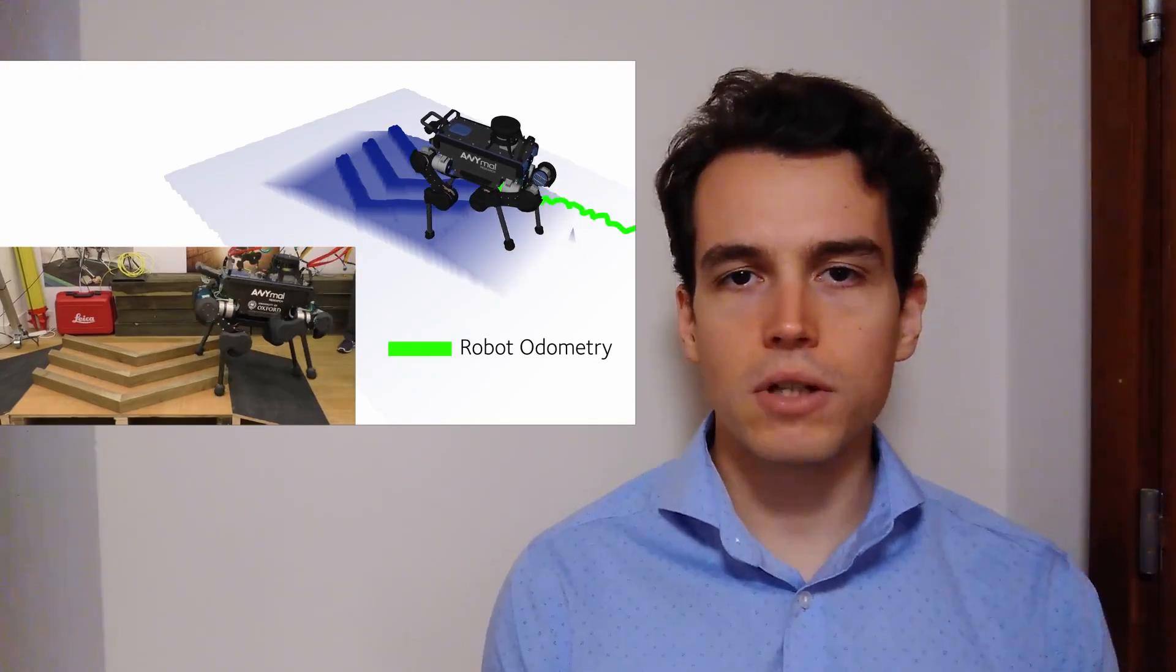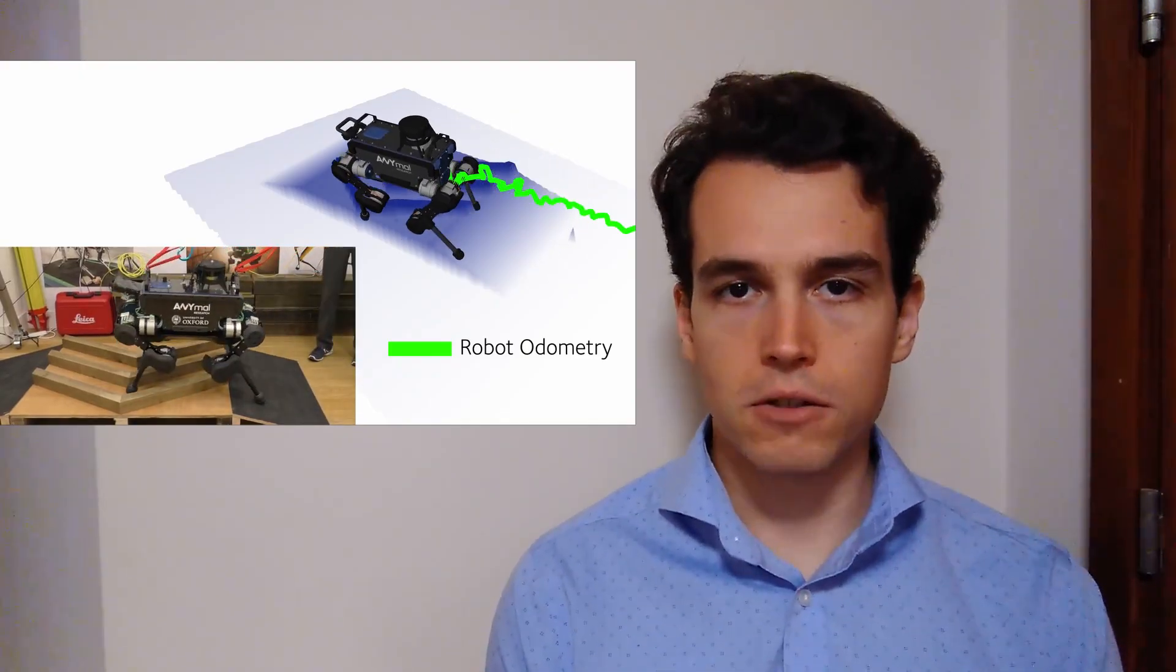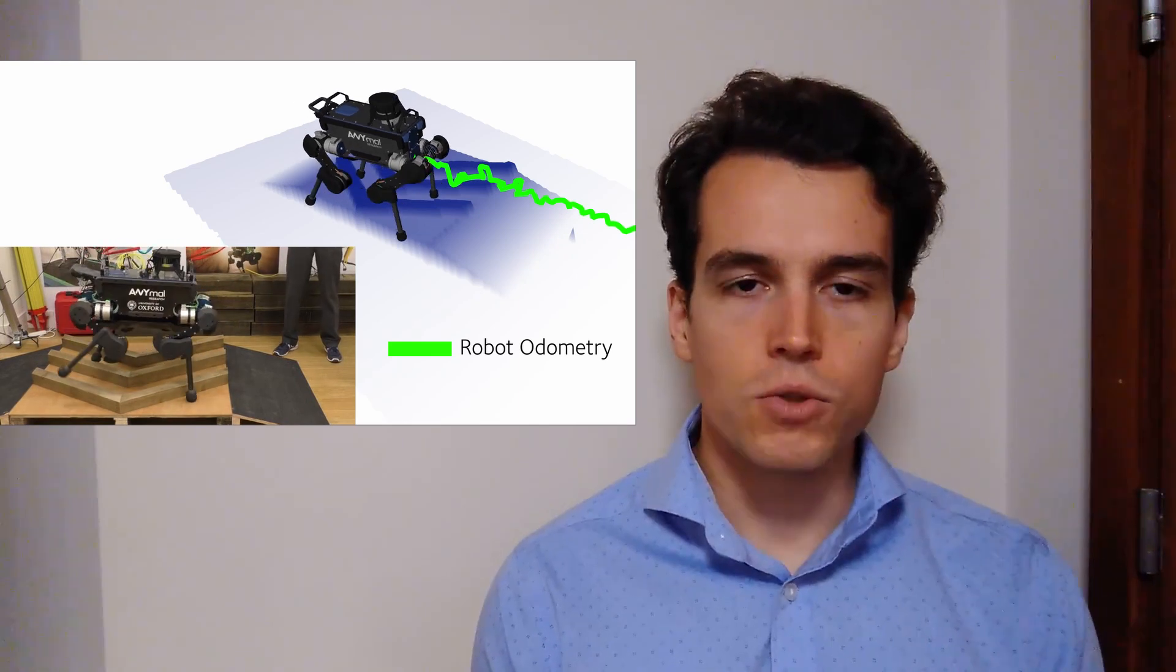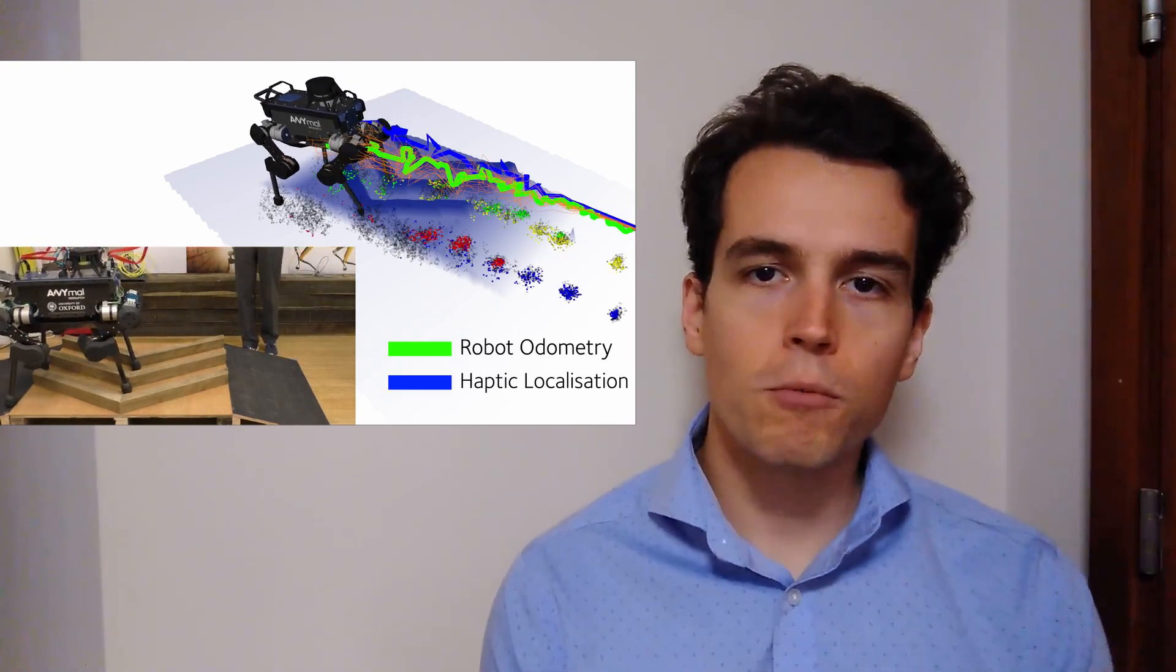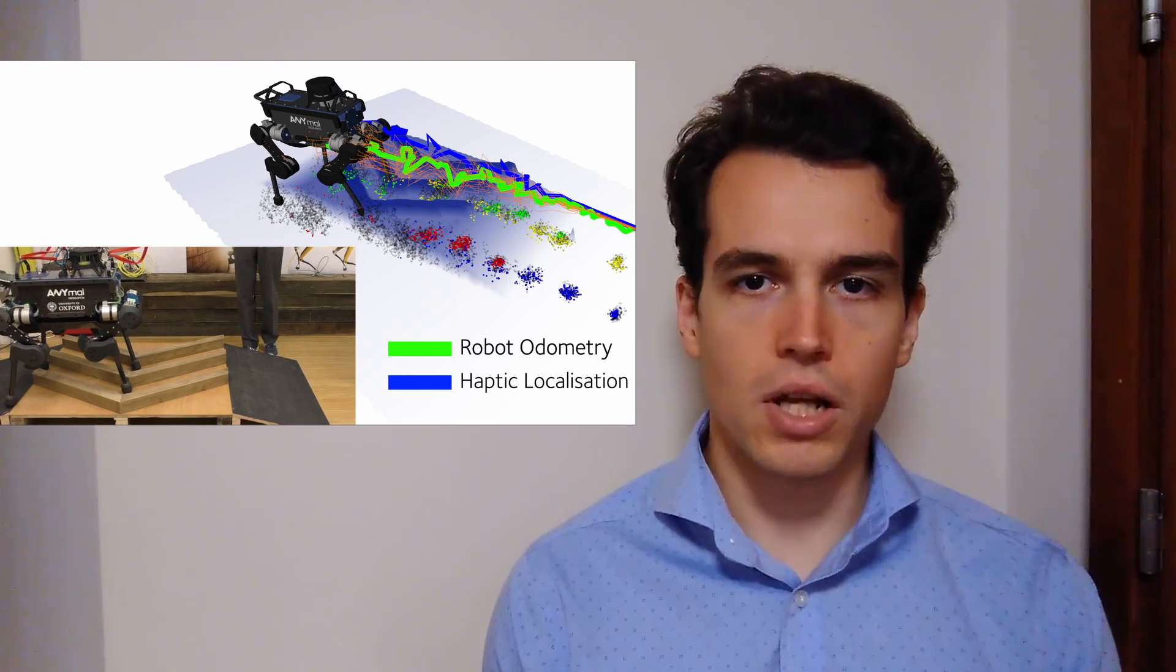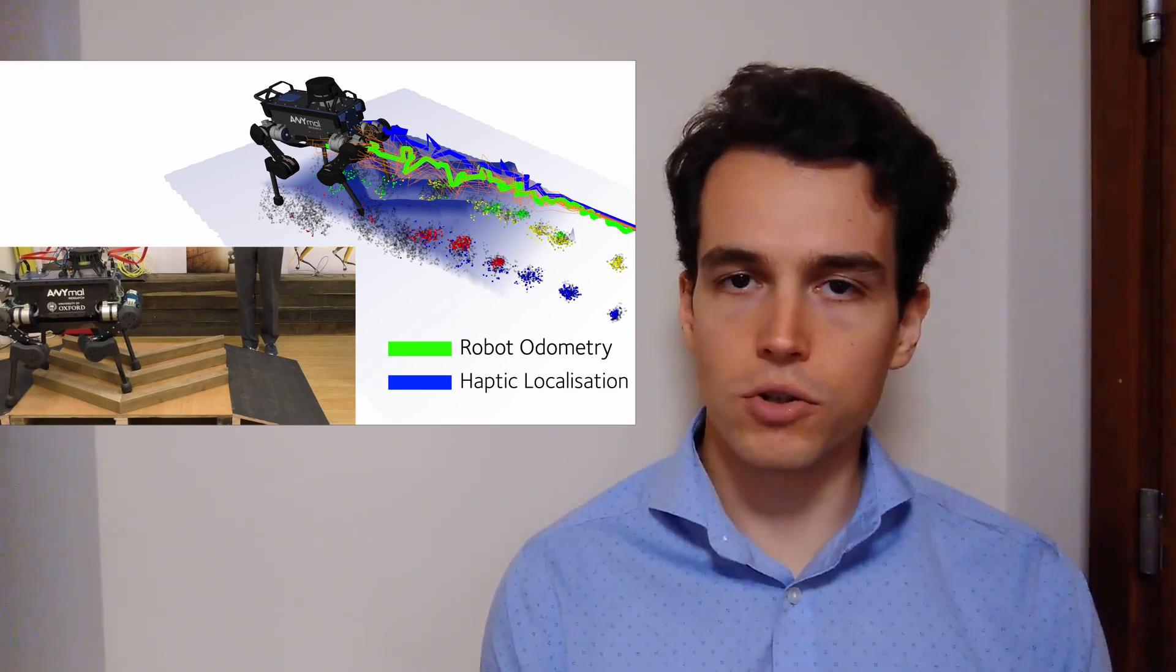For these situations, we have developed a localization algorithm based on sequential Monte Carlo methods, which enables a legged robot to localize using only proprioceptive sensors, such as an IMU, encoders, or torque sensors.